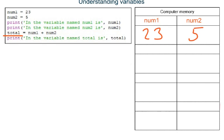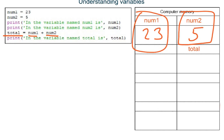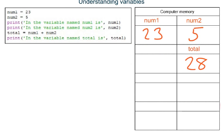Line 5 creates a new variable named total. The program then looks up what is stored in variable num1 and what is stored in variable num2, and adds these two values together — 23 plus 5 equals 28 — so 28 is stored in variable total. The last line outputs what is stored in variable total.